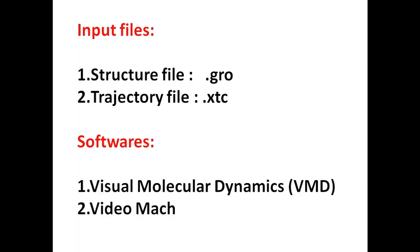Suppose you have performed MD simulation of a protein-ligand complex over around 100 nanoseconds and you want to create a simulation video. For that you are going to need two kinds of input files: one structure file containing the structure of protein, ligand, water molecules, and everything. If you have performed MD simulation using GROMACS, the structure file will have extension .gro. Along with this structure file you are going to need a trajectory file, which contains information about the movement of the protein complex.